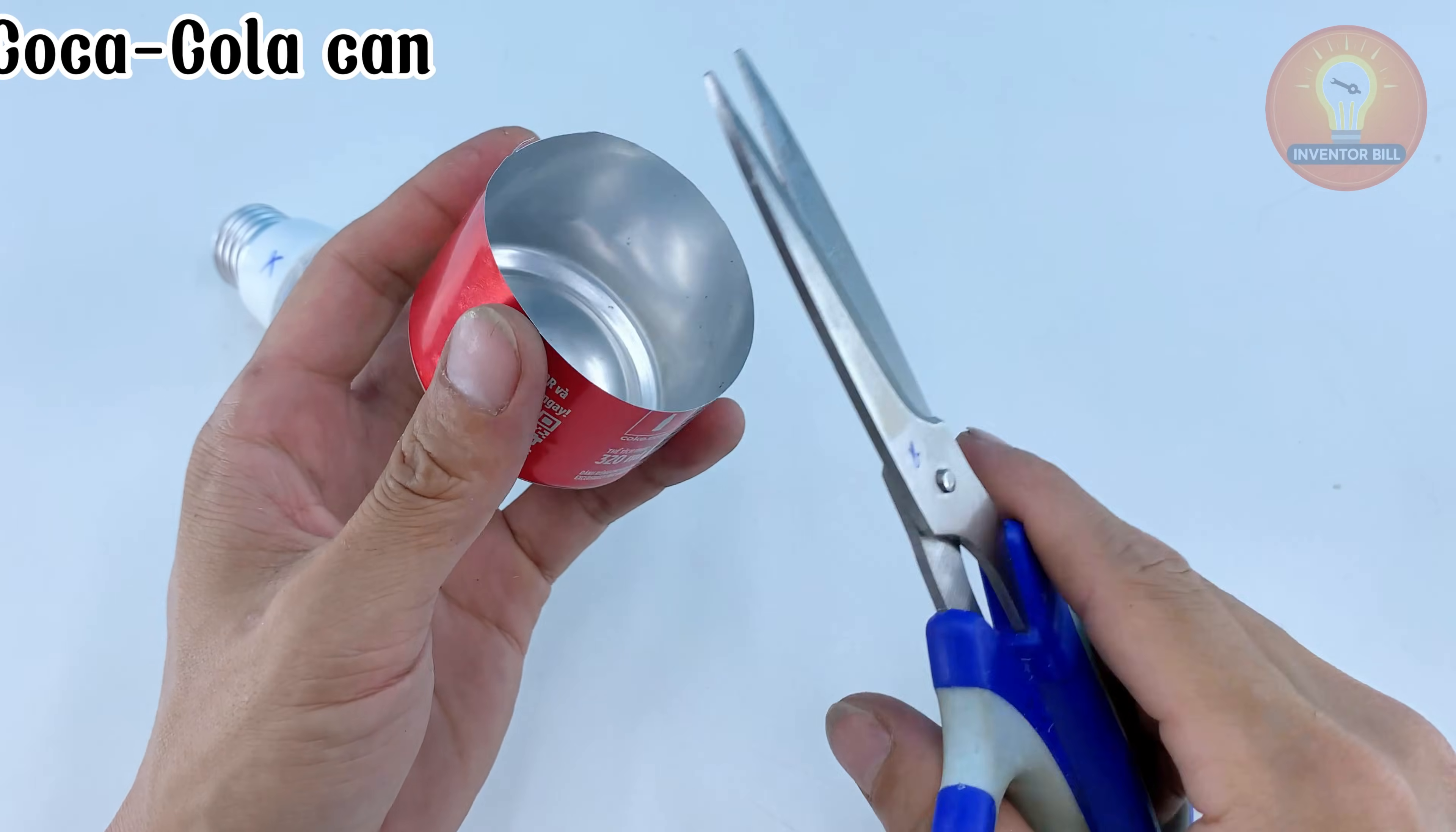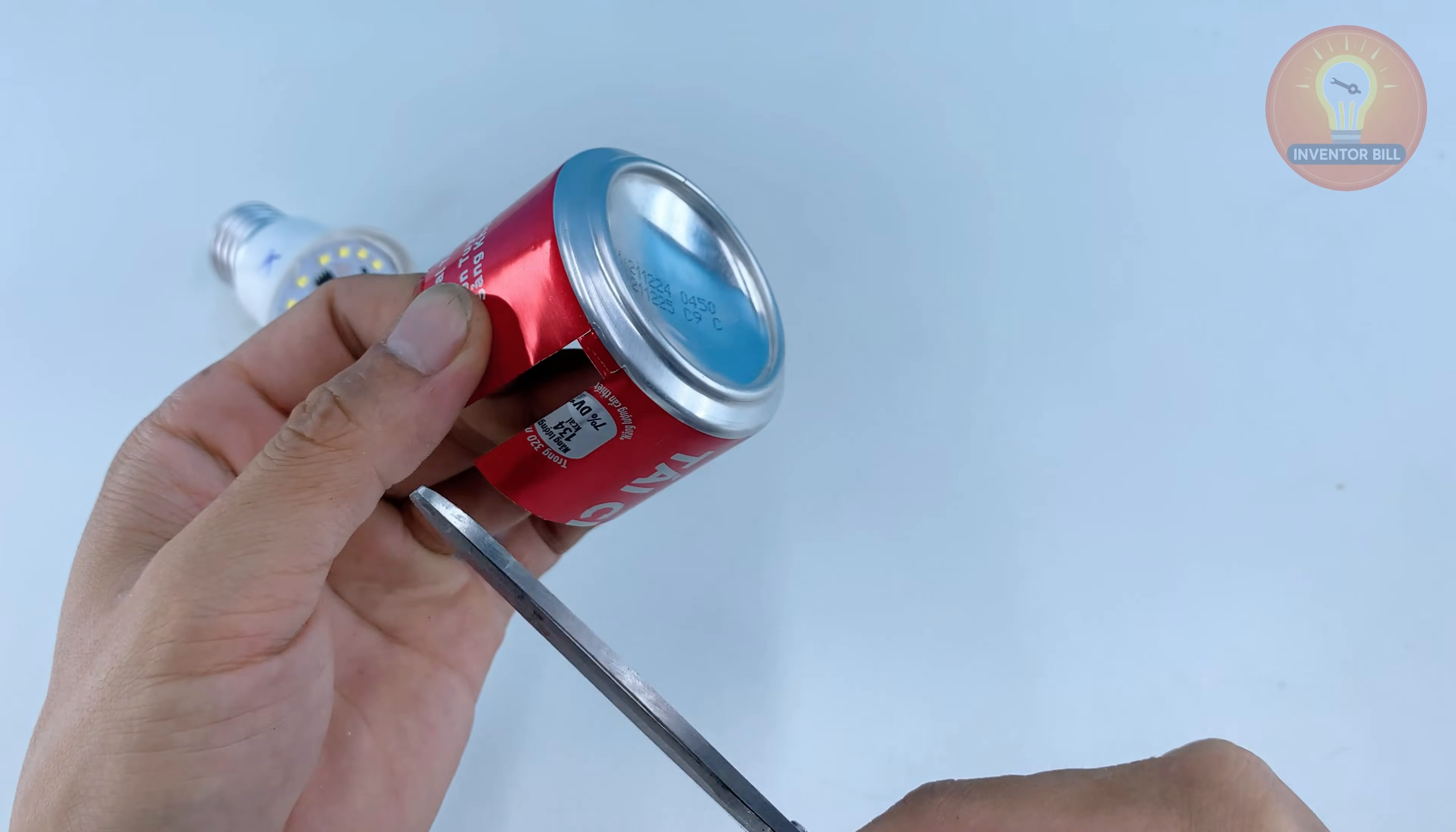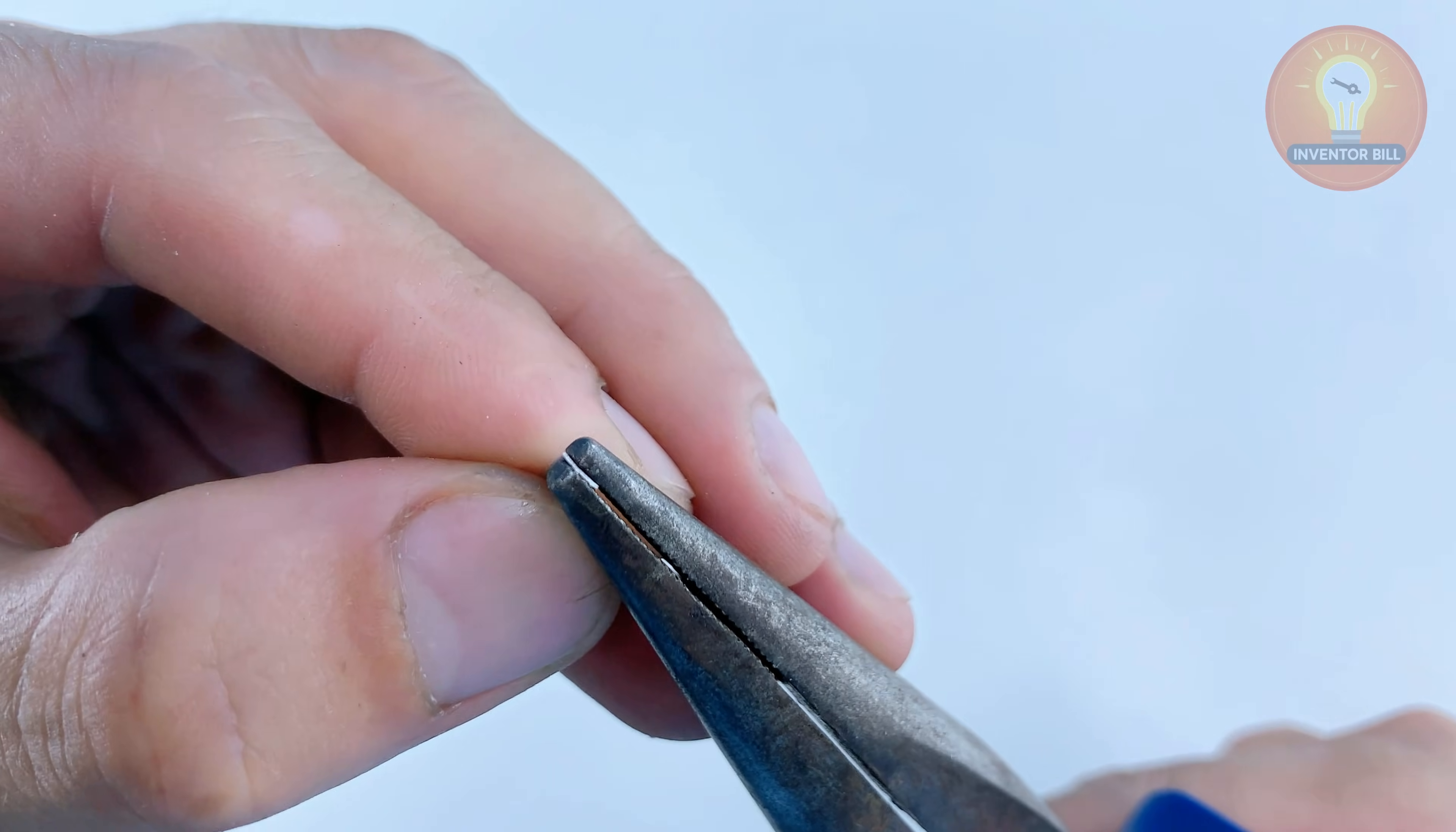Take an empty Coca-Cola can and cut out a small section from the side wall. Use your utility knife carefully and keep your fingers clear so you stay safe. Trim the piece down until you have a thin strip you can bend easily. Fold this strip into a small clip shape so it can press firmly against the contact point on the LED board. Make sure the edges are smooth enough to handle. This little piece of aluminum will act as the bridge that helps you reconnect the damaged LED spot.